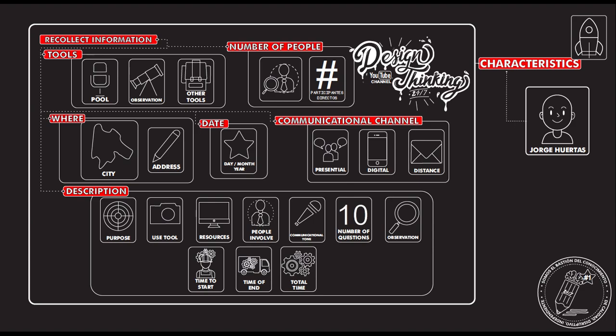This is the first data sheet — the one used when you recollect information. The idea is that people will understand the magnitude of your survey, of your poll, of your observation. And then we have the most traditional data sheet, which is the one we see every time we buy a product.